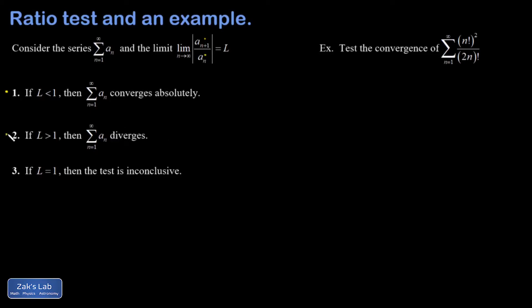If you get a limit bigger than 1, it shows that the series diverges. If you get a limit equal to 1, the test is inconclusive and you have to try something else.